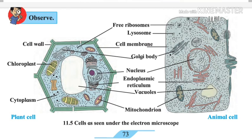The first component is the cell wall. The cell wall is found around the cells of algae, fungi, and plants. Animal cells do not have a cell wall. The cell wall is an elastic and strong coat around the cell membrane, mainly composed of carbohydrates like cellulose and pectin. The functions of the cell wall are to support and protect the cell by preventing the entry of excess water into the cell.